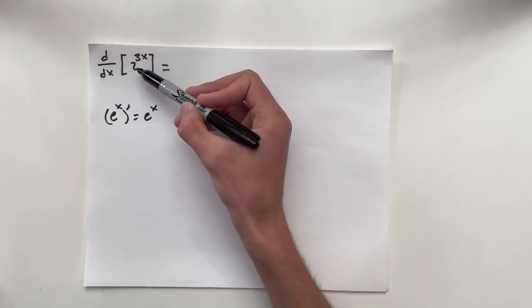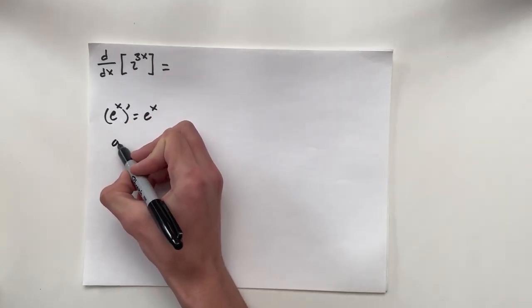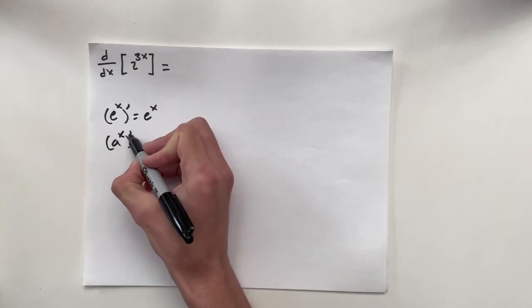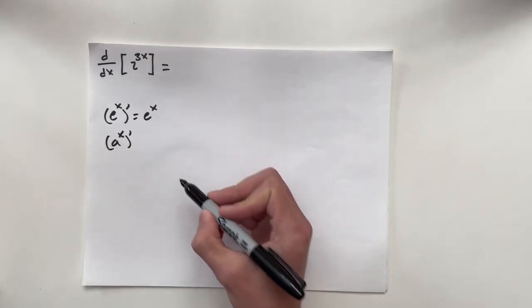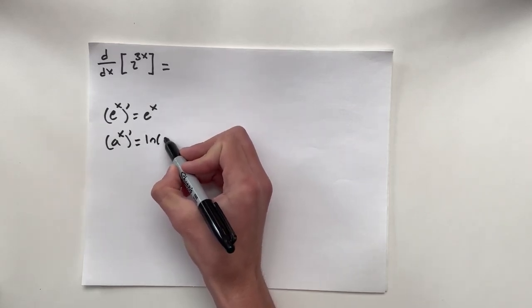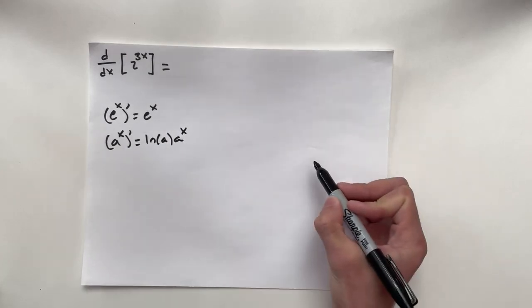And you can look at proofs if you want to. But when we have a different base other than e, let's call it a, a to the x, when we differentiate that, the general rule is we take the natural log of a, we multiply it by a to the x.